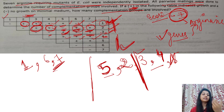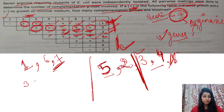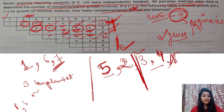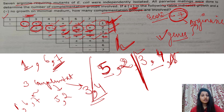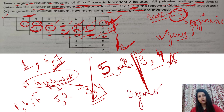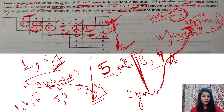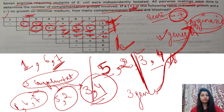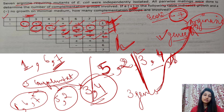From this analysis we can conclude that there are three complementation groups. The first complementation group is mutants 1, 6, and 7. The second complementation group is mutants 2 and 5. The third complementation group is mutants 3 and 4. This also means that three genes are involved in the formation of arginine — one gene is mutated in each complementation group.